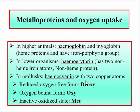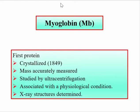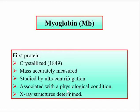Myoglobin is the first protein that was crystallized, in 1849, and it is the first protein whose mass was accurately measured. It was first studied by ultracentrifugation and first reported associated with a physiological condition. It was also the very first protein whose X-ray structure was determined.